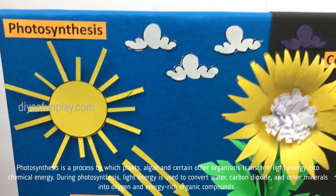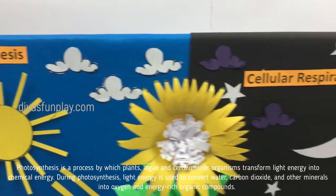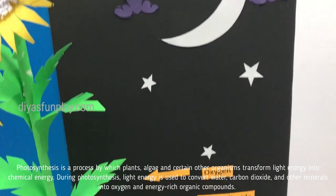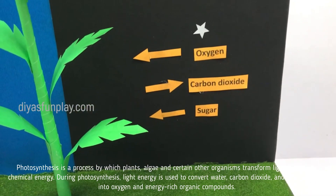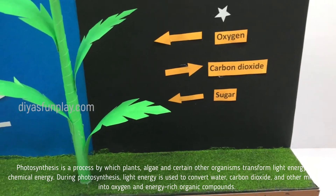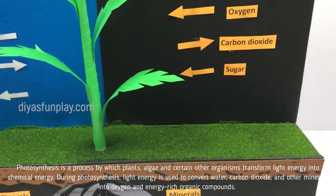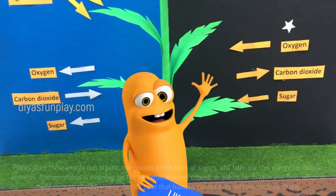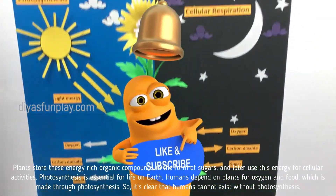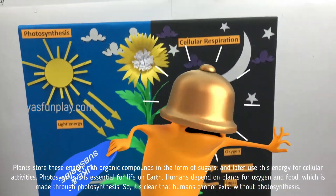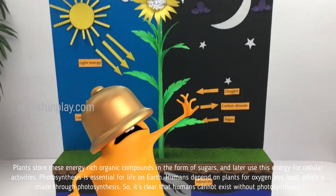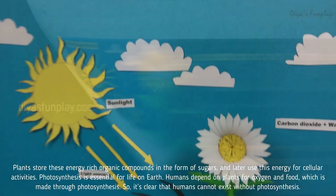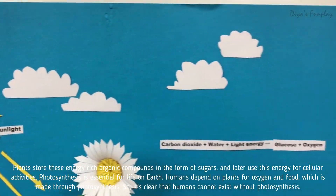During photosynthesis, light energy is used to convert water, carbon dioxide and other minerals into oxygen and energy-rich organic compounds. Plants store these energy-rich organic compounds in the form of sugars and later use that energy for cellular activities.